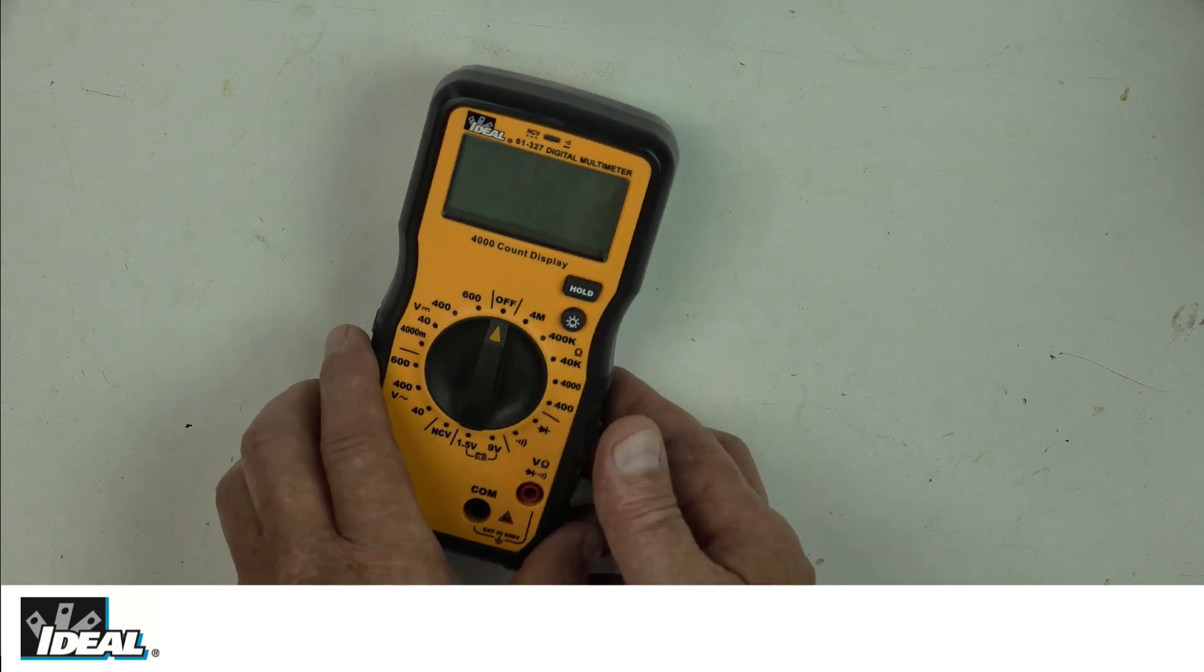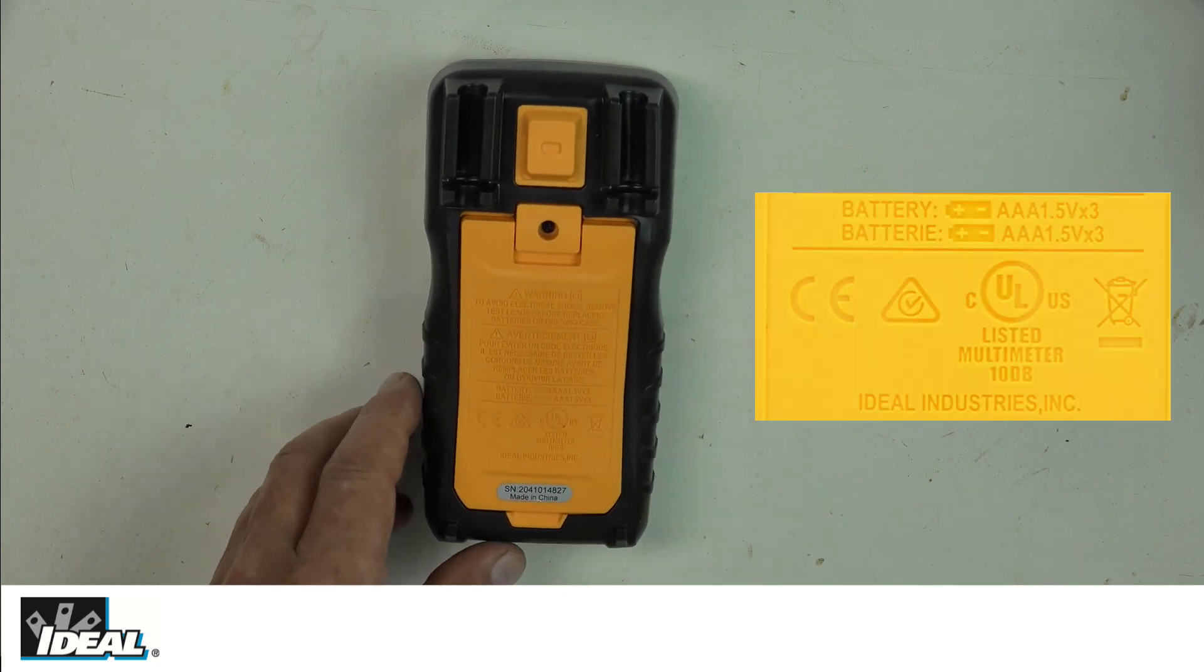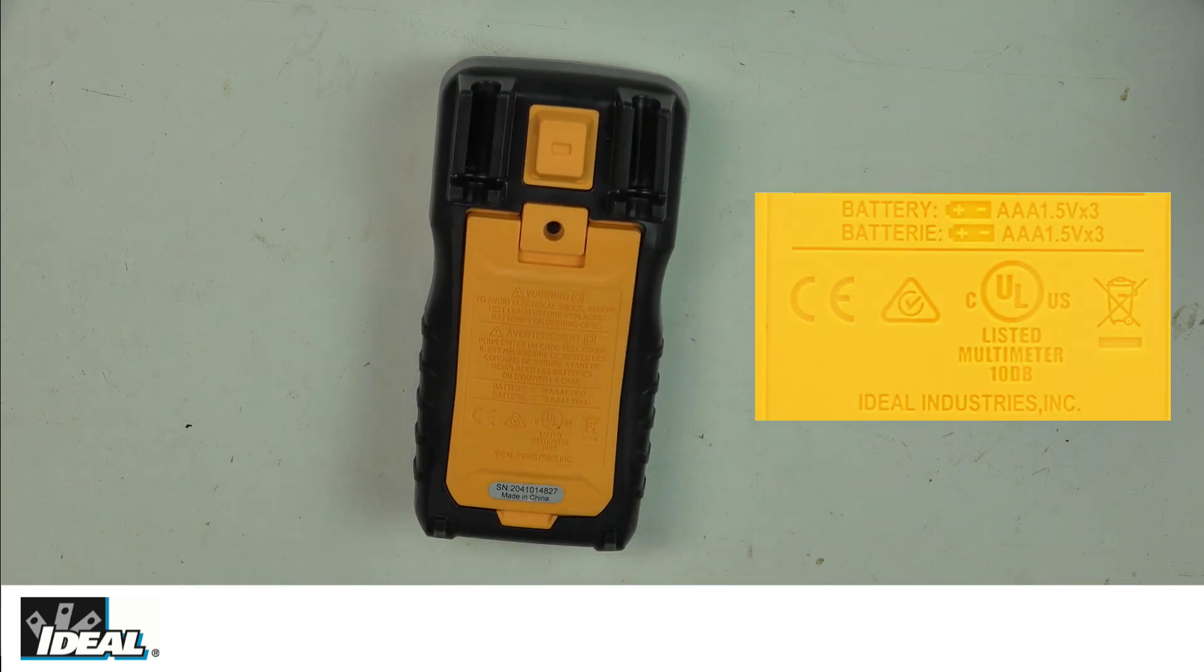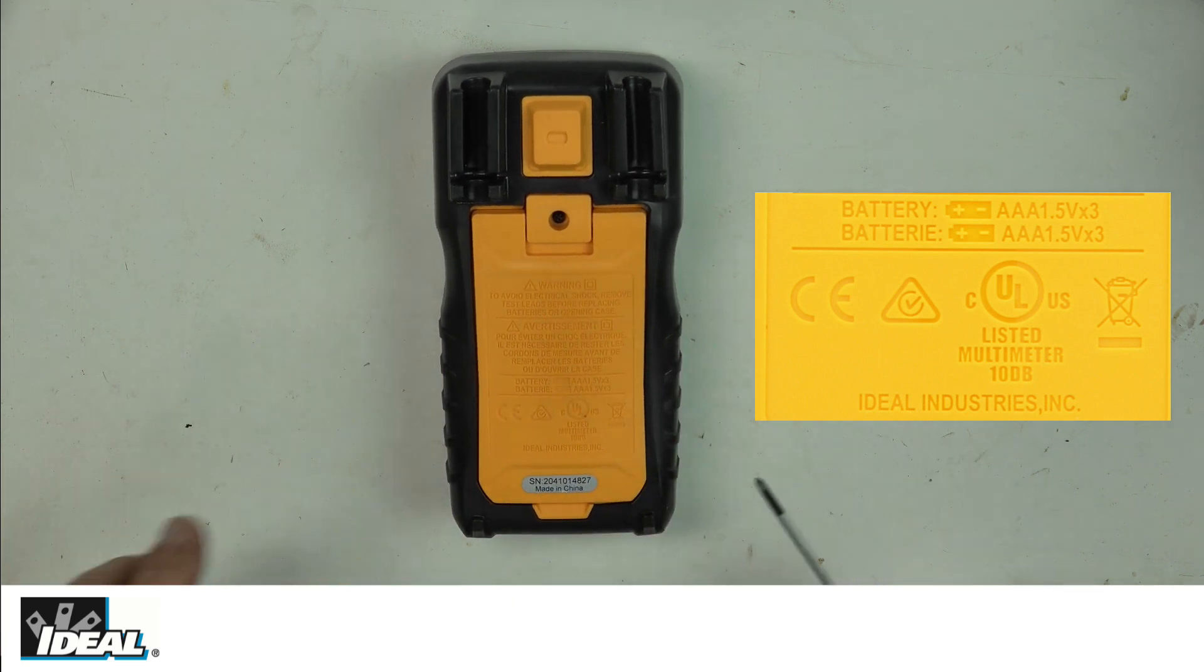On the back of the tester, there are three different third-party testing laboratories that have certified these testers. There's UL for both Canada and the United States, CE which is European, and the little triangle is for Australia. We've submitted these testers to UL and they meet or exceed all the testing requirements they lay out for electrical testers.